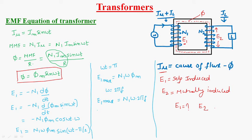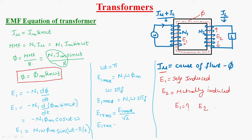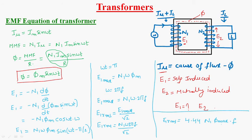We have to consider the RMS value: E1_RMS = E1_max / √2 = N1 × 2πF × φ_M / √2, which equals 4.44 × N1 × φ_max × F. So E1_RMS = 4.44 × N1 × φ_max × F.